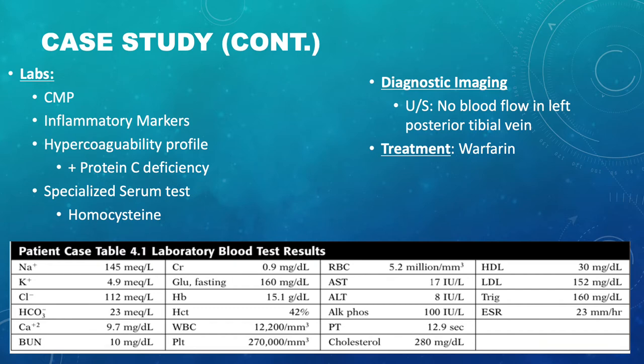Most significantly, JB's hypercoagulability profile was positive for protein C deficiency. Protein C deficiency makes one more prone to blood clots.